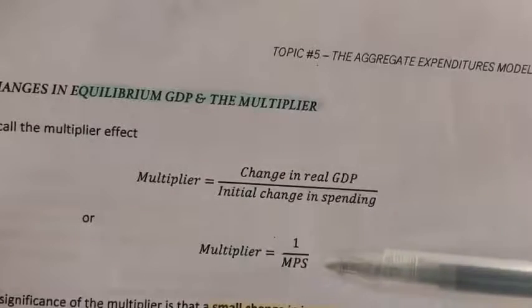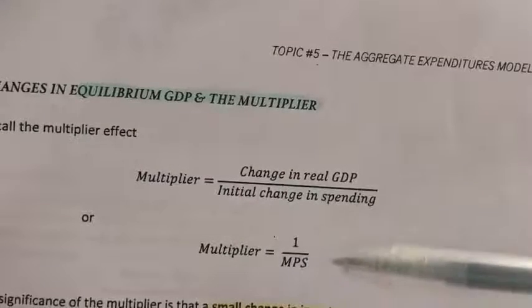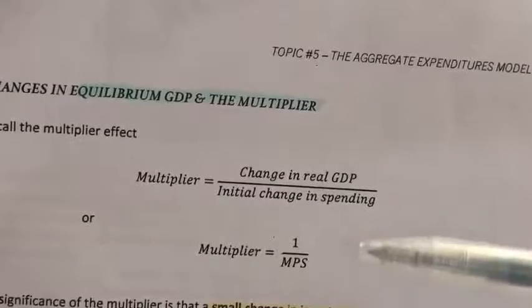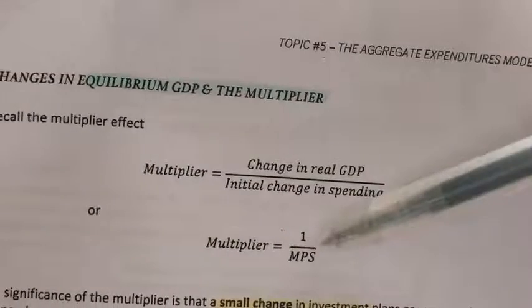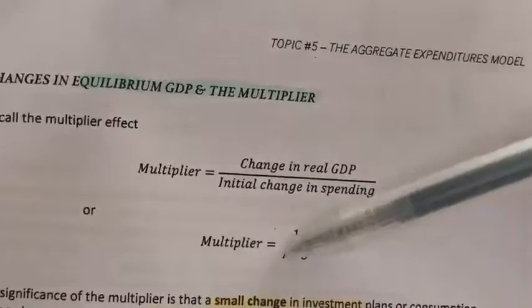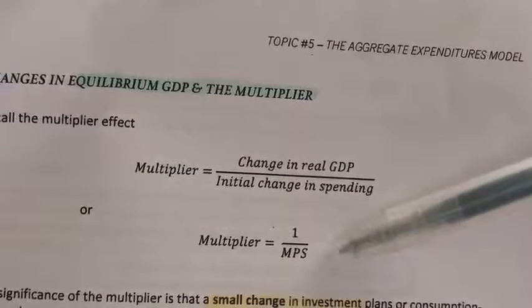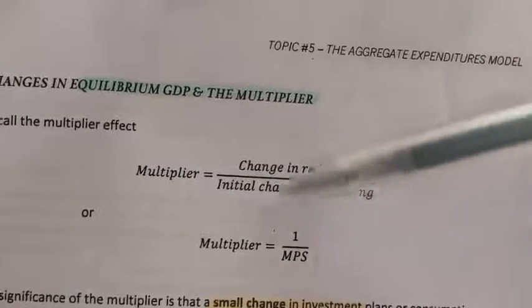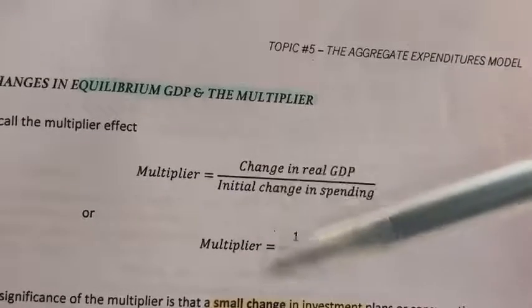So, imagine if people save more and more, what is the implication of consumption? People will consume less and less, right? So, if you look at the denominator down here, as it goes higher and higher, what it means is we're taking one over a bigger and bigger number. So, what does that imply to the multiplier? It will become lower and lower.